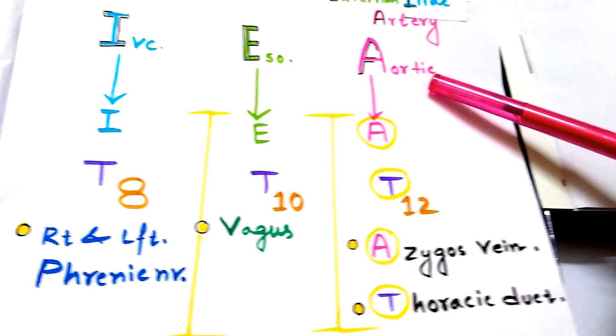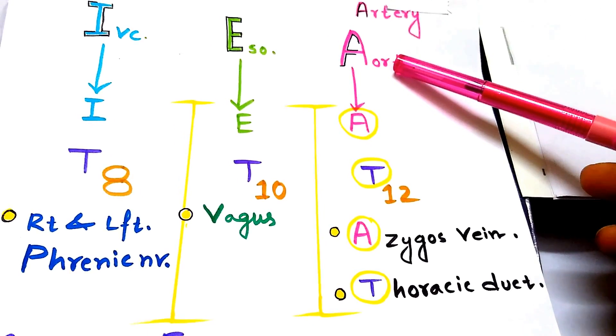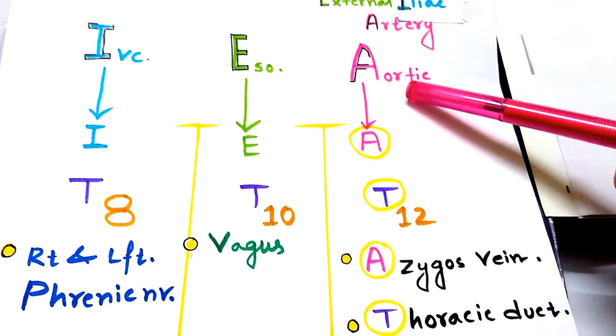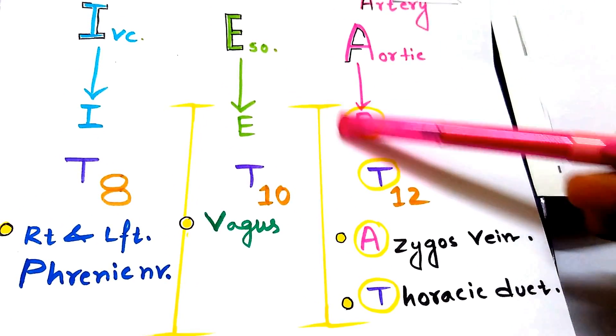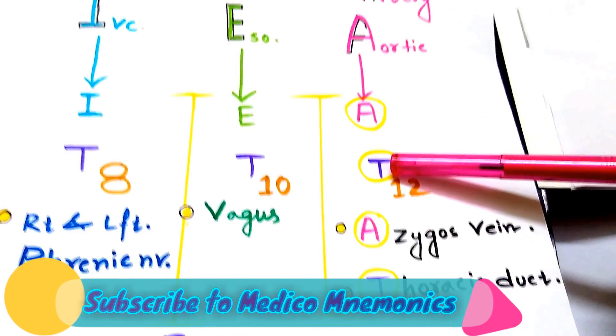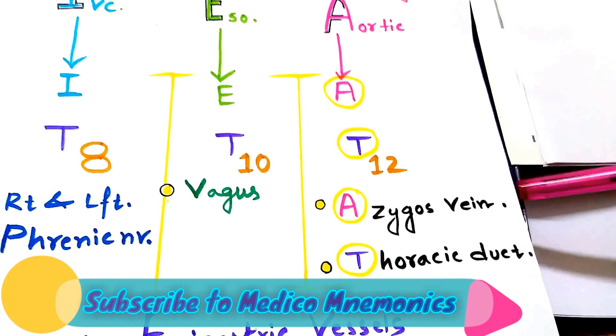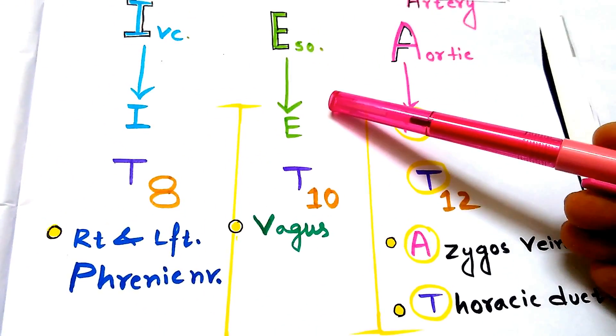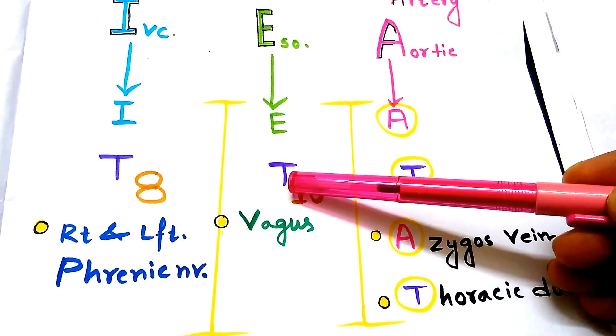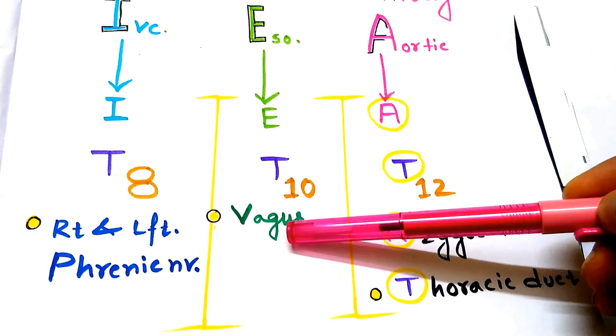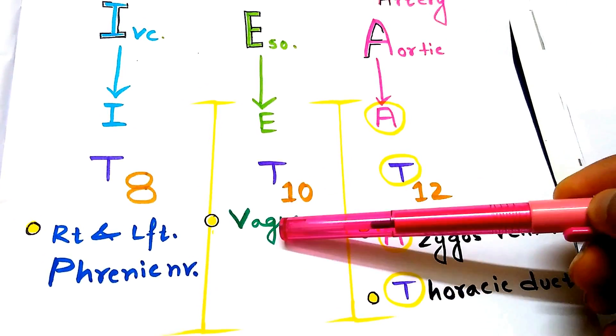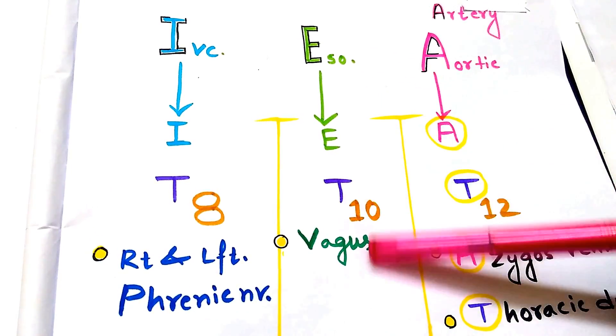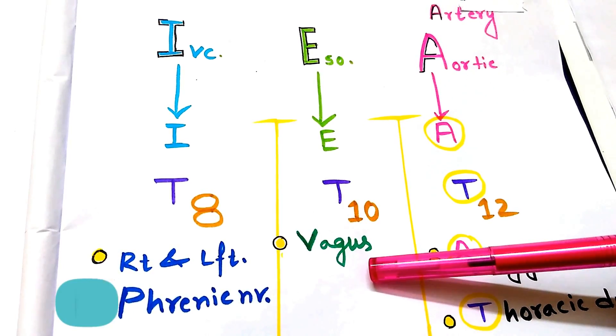Now it is about the contents. By the aortic opening, by the name itself we can obviously say that aorta passes through. In the aortic segment we can find A and T - A for Azygos vein and T for Thoracic duct. In esophageal opening which is at the level of T10, the important structure which passes through it is Vagus nerve. Vagus supplies the esophagus and the whole GIT by parasympathetic supply and also by sending secretomotor fibers.